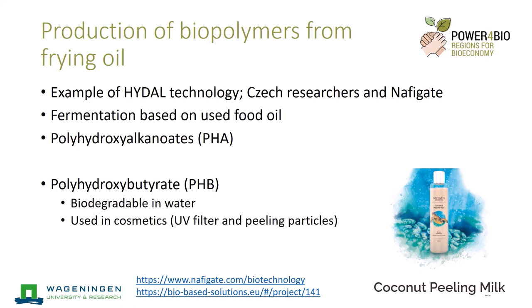PHA, polyhydroxyalkanoate, can also be made from frying oil. An example of that is in the Czech Republic, where through use of the Hydal technology, Czech researchers and Navigate, a small company, used fermentation to produce PHA, including polyhydroxybutyrate (PHB). They are using that now in, for instance, coconut peeling milk. The PHB is biodegradable in water and is used as peeling particles, but it can also be used as a UV filter.